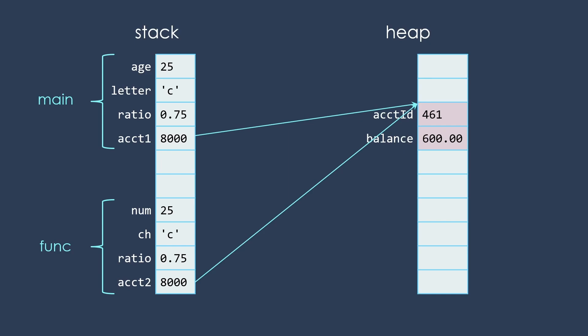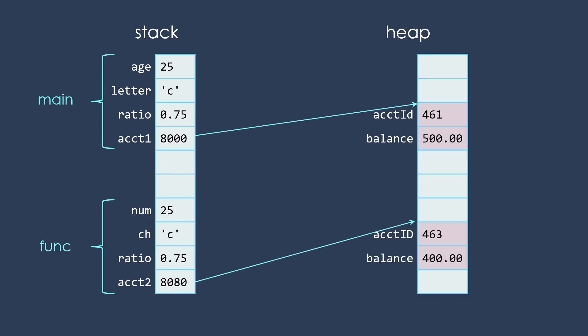So both of those references are pointing at that same object over in the heap. When I make changes to that object using the account2 variable in the function, the account1 reference variable in main is also pointing to that same object that was changed. So when we get back to main after the function is over, we're going to see those changes. What if instead of depositing more money, we actually create a new account? Notice that that doesn't affect account1 because we did pass that reference by value — we made a copy of it. When we change the value of the reference, the old reference is still there and the old object is still there. We change what the reference is pointing at; it changes for everything pointing at that particular object. But if we change where the reference points, that doesn't change back in main.